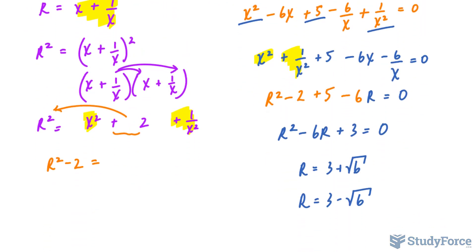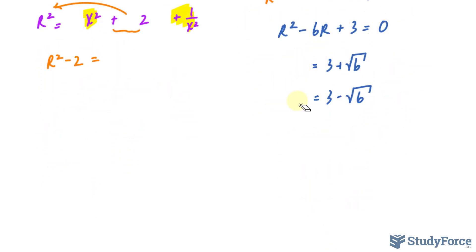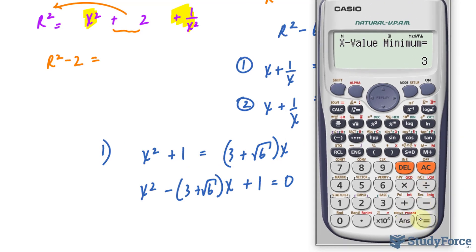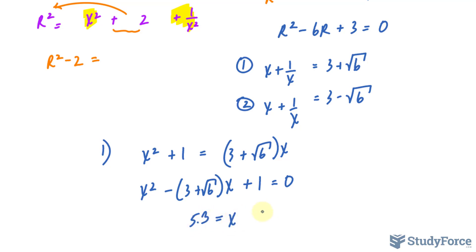Remember that r = x + 1/x. So for r = 3 + √6, we have x + 1/x = 3 + √6. Multiplying both sides by x: x² - (3 + √6)x + 1 = 0. Using the calculator with a=1, b=-(3 + √6), and c=1, we get two roots: x ≈ 5.3 and x ≈ 0.19.